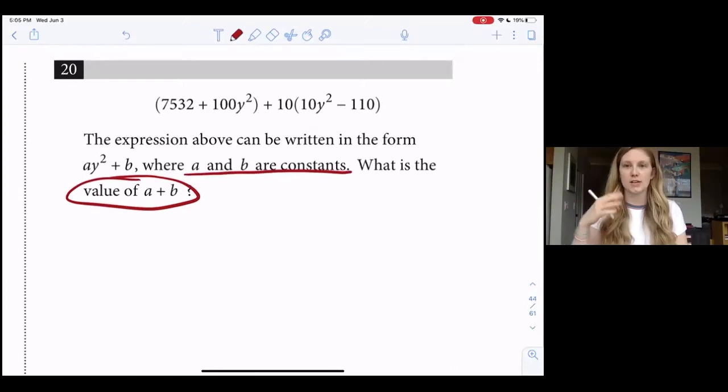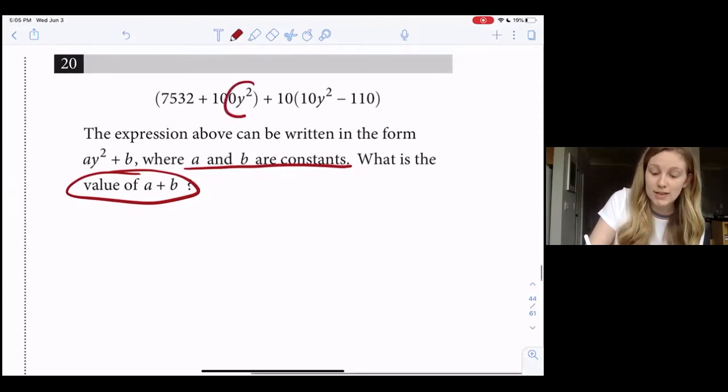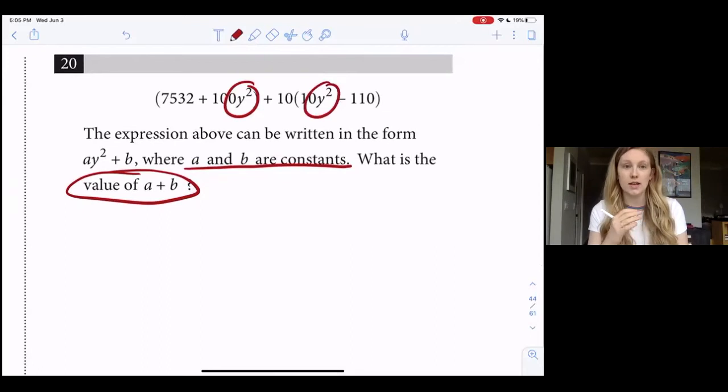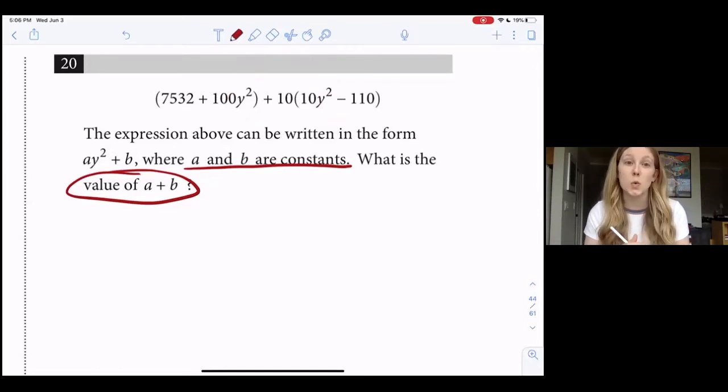And again, we're told that these two variables are actually constants, so remember anytime you see constant it's just a number. So we don't need to be scared of that word - it's just a value and we can solve for it. When they say in the form ay² + b, you'll notice that we have y² in the expression above - we have multiple terms with y² and then we also have other terms that are just numbers without a variable. So what this question is telling us is that the coefficient that's attached to our y² term is going to be a, and then b is going to be the term without a variable. So all we have to do here is actually just combine like terms and then identify those two numbers and add them together.